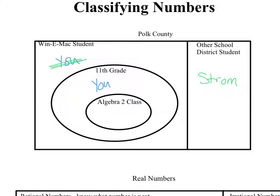We can go even farther and say you're in my Algebra 2 class — you also belong here. I need to cross you off here and put you here, because you want to be as specific as possible. You are in the Algebra 2 class, so you belong there. The 11th grade is just outside, and then Winnie Mac student. So you are in all of it. Whoever is right here is also in the 11th grade, is also a Winnie Mac student.